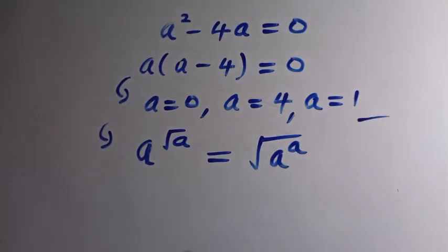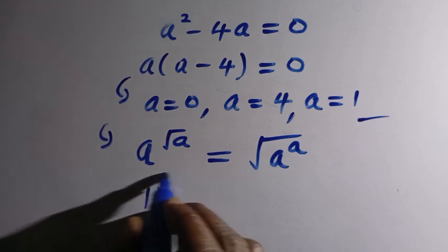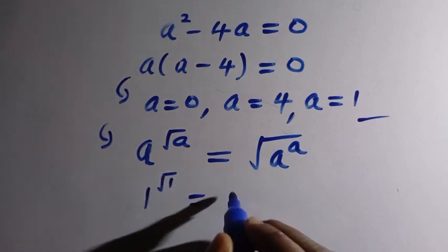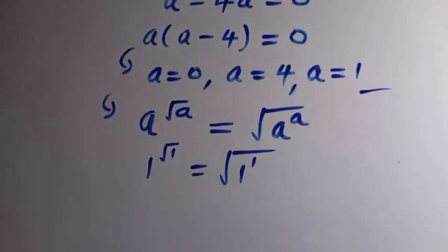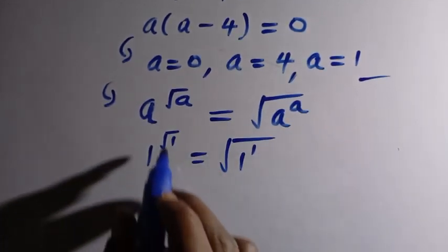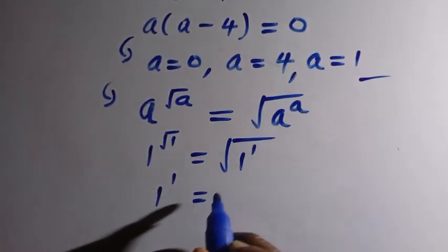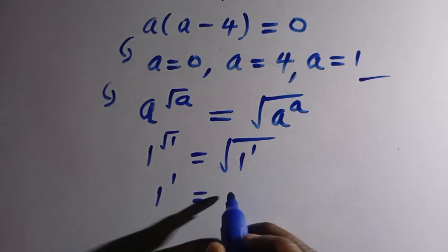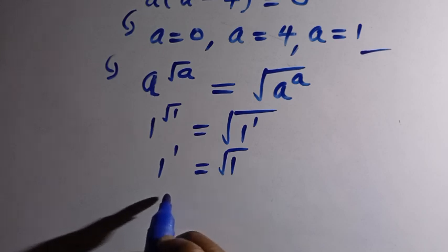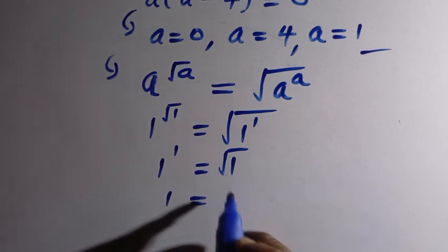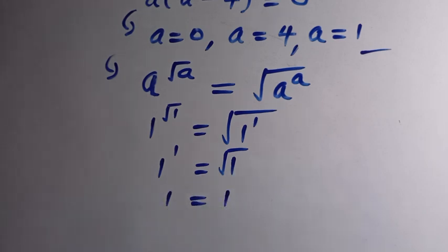Starting with a equals 1: substituting gives 1 raised to the power of square root of 1 on the left, and the square root of 1 raised to the power of 1 on the right. The left-hand side is 1 raised to 1, which is 1. The right-hand side is the square root of 1, also 1. So a equals 1 satisfies the equation.